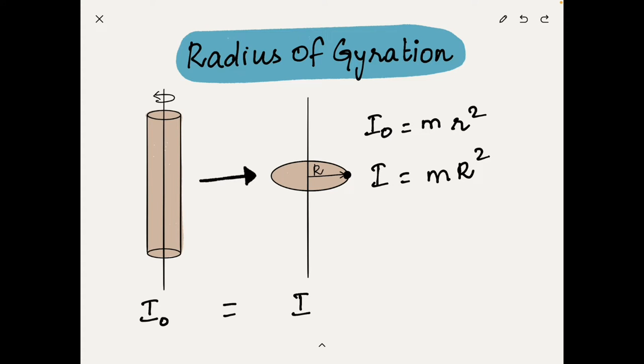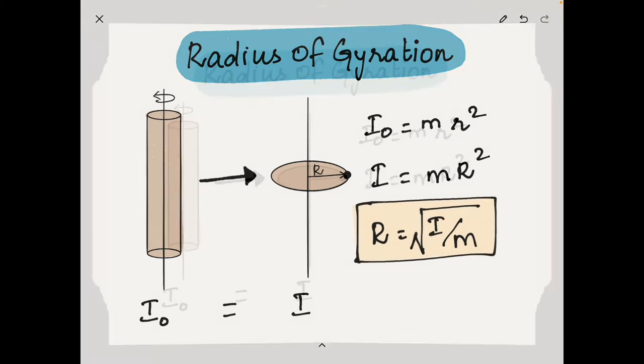When we equate these two mass moment of inertia and try to express the radius of gyration, we will have r is equal to square root of I divided by m, where I is the mass moment of inertia of the structure and m is its mass.